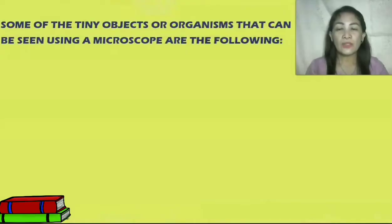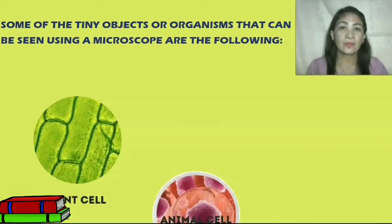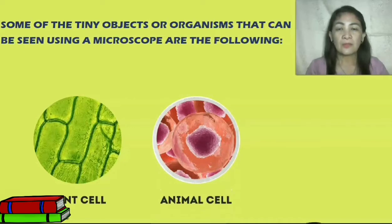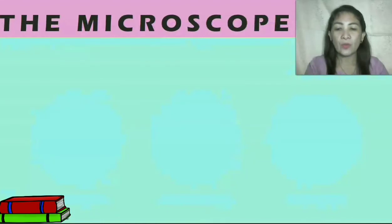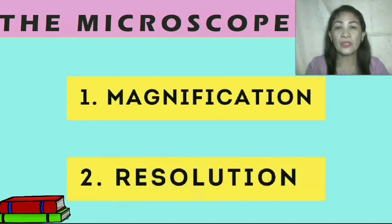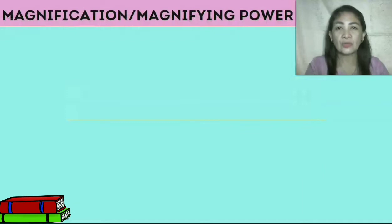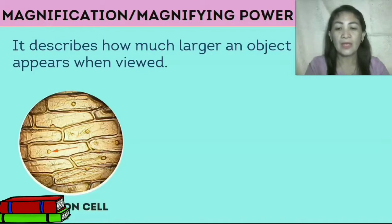Microscope makes small objects look bigger. Some of the tiny objects or organisms that can be seen using a microscope are: plant cell, animal cell, and microorganisms like bacteria. To understand how the microscope works, we need to be familiar with two terms: one, magnification; two, resolution. When we say magnification or magnifying power, it describes how much larger an object appears when viewed.